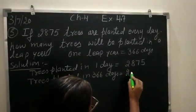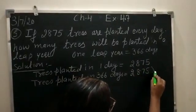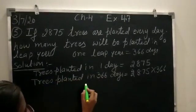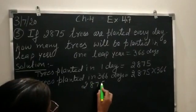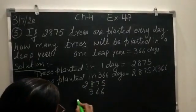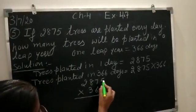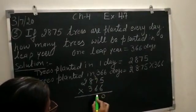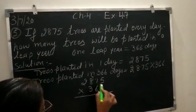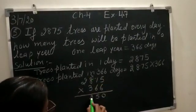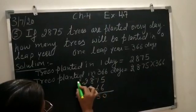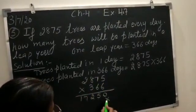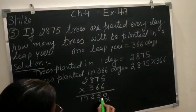Multiply 2875 by 366. Show the multiplication here. 2875 multiplied by 366. Six fives are 30, 3 carry here. Six sevens are 42, plus 3, 45. 4 carry here. Six eights are 48, plus 4, 52, 5 carry here. Six twos are 12, plus 5, 17.